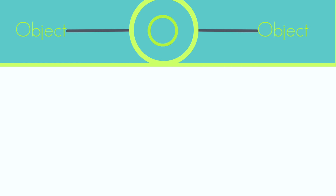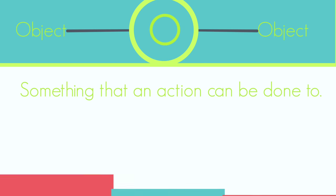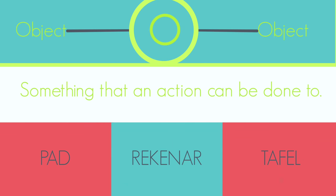The fourth letter in Stompy is O, and it stands for OBJECT. An object in a sentence is a noun, and something that an action can be done to. For example, you can play on a soccer field, which is actually a place, and you can play with a soccer ball. So, examples of objects can be REKENAAR, TAFEL, and PAD. REKENAAR is a computer, TAFEL is a table, and PAD is a road.